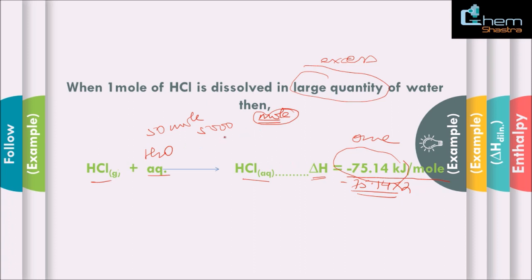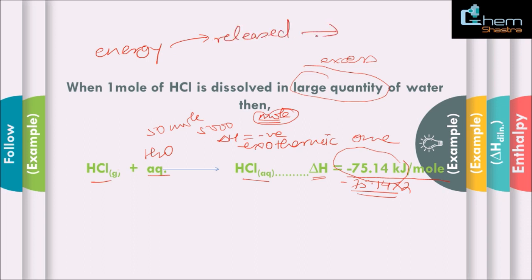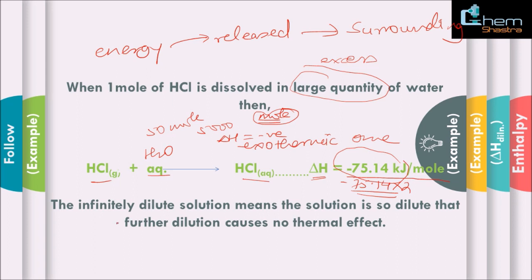Once you have this value, you can see that delta H is negative, which means this process is also an exothermic process. So we can make a general statement: the enthalpy of dilution is an exothermic process. Whenever you perform a dilution, energy will be released by the system to the surrounding. Now, regarding infinite dilution — suppose I start with HCl in the gaseous state, and in the first example I added 50 moles of water and got a certain enthalpy of dilution.